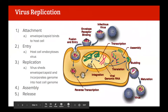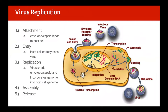Here are the five steps of virus replication. First, the virus attaches to the host cell - either via the envelope or the capsid binding to the cell membrane. The virus gets endocytosed - that's entry. It's now inside the host cell. It sheds its envelope and the capsid brings the genetic material into the nucleus so the cell will replicate the virus for it. The viral genetic material is incorporated with the host cell's genetic material.